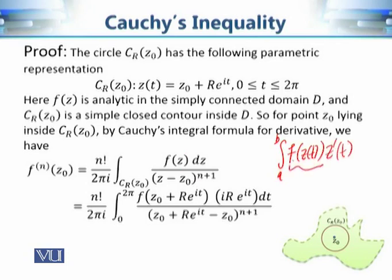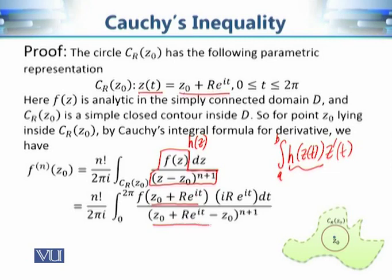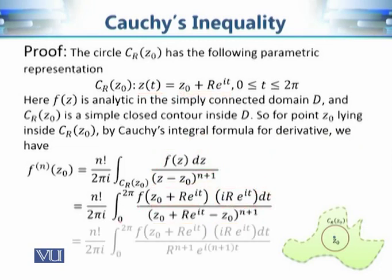We evaluate this contour integral using the first definition of contour integration, writing limits 0 to 2π with f(z(t)) and z'(t). Replacing z with z₀ + r·e^(iota·t) in the numerator and denominator, we get the parametric form. The denominator becomes z₀ + r·e^(iota·t) − z₀, and z'(t) corresponds to the derivative of the parametric representation. The parameter t varies from 0 to 2π.